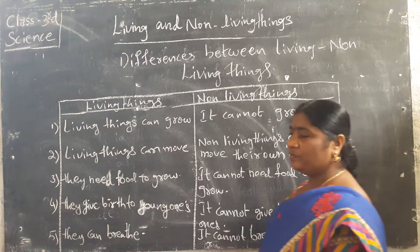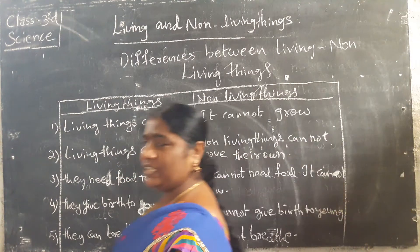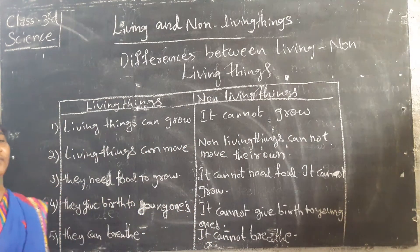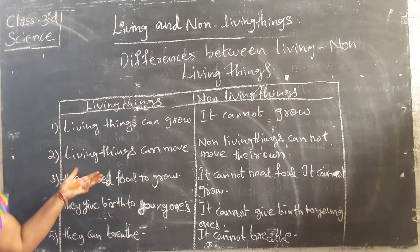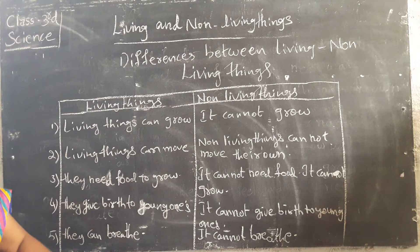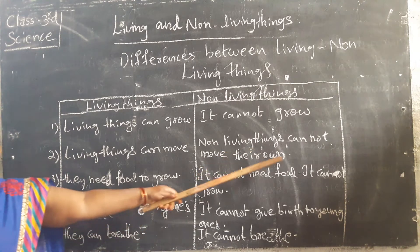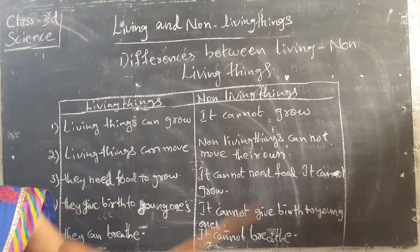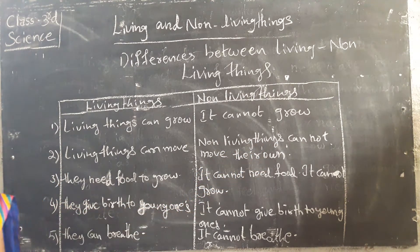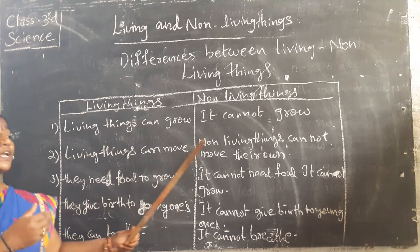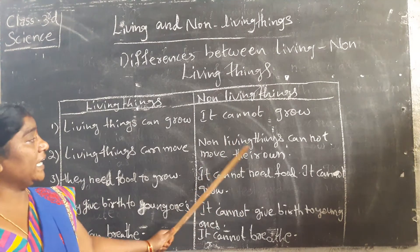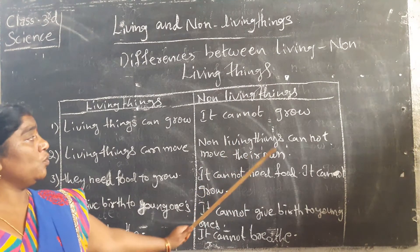Living things can move from one place to another place to search for food, work, and in any types of ways. But non-living things cannot move on their own. We have to take them and go — non-living things cannot go on their own.